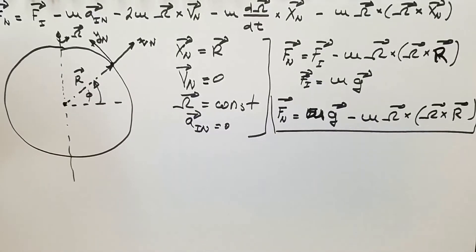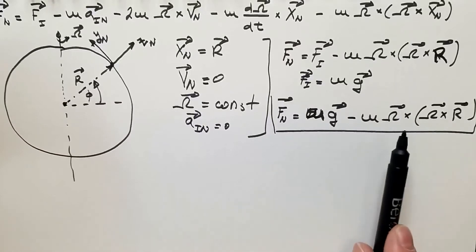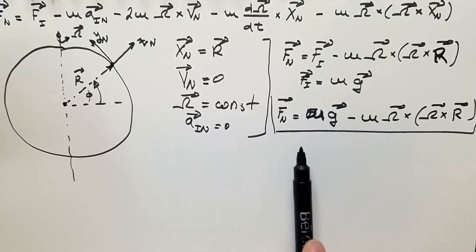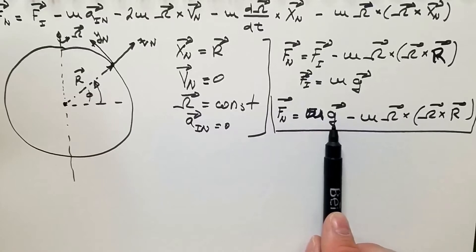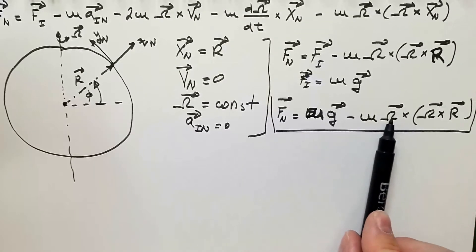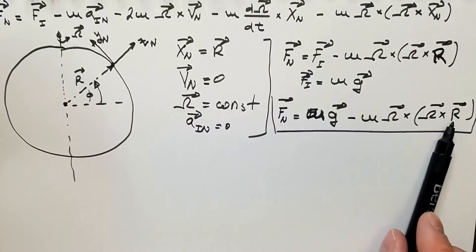So, in order to calculate this apparent acceleration due to centrifugal acceleration, we need to find the components of these three vectors, namely components of G, components of omega, and components of R. And this is what we will do next.